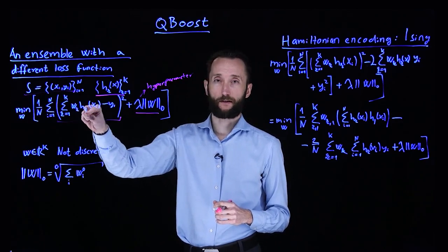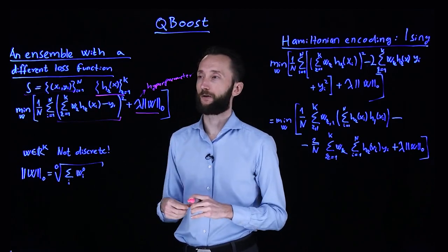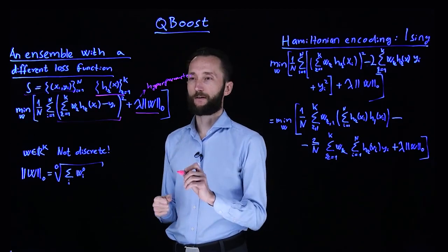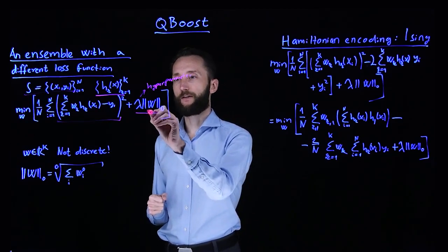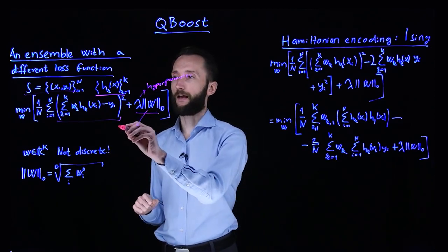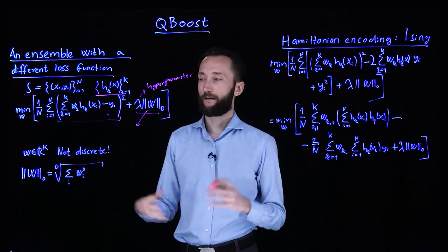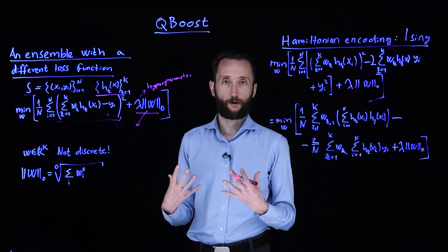So zero means that the model is not included, and the non-zero value means that the particular model will be part of the ensemble. So this way, we can find the trade-off between having a simple model and having some addition to the ensemble that may or may not improve our overall prediction.